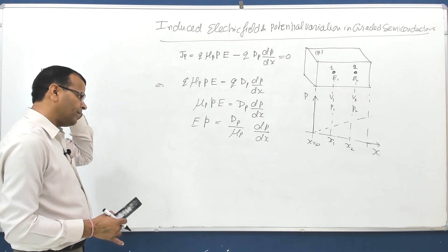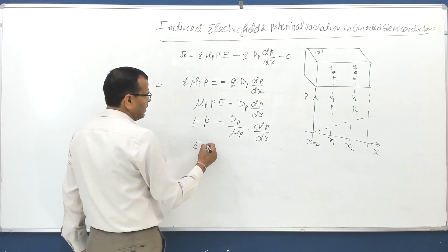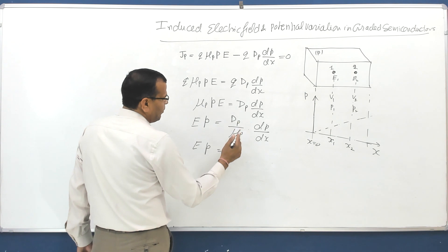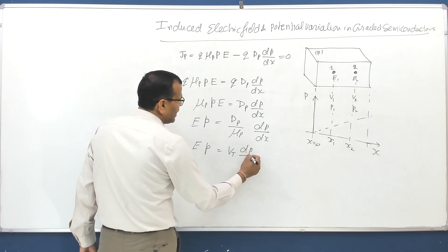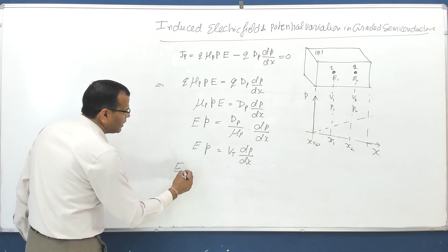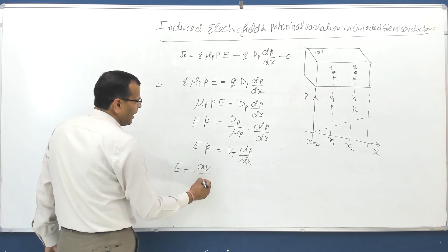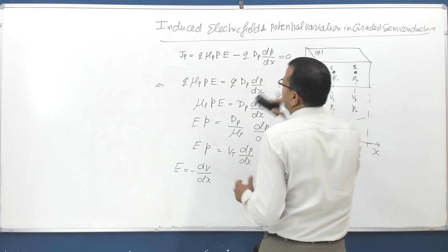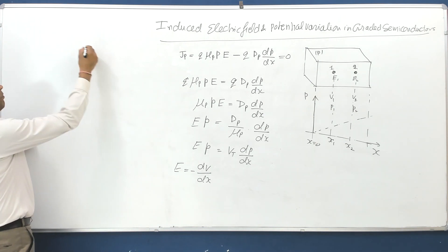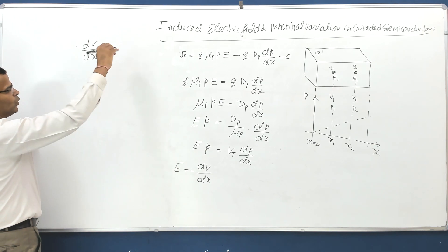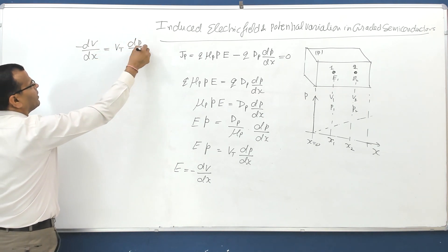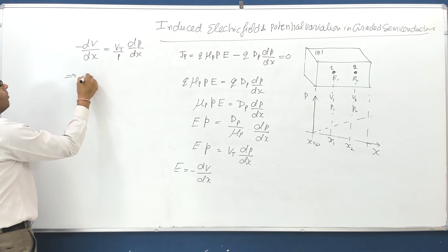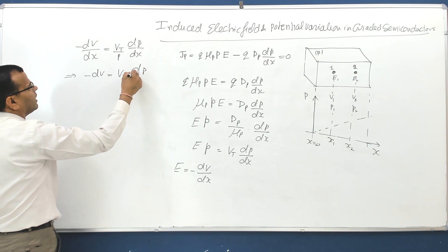Here, E·p = (Dp/μp)·(dp/dx), and Dp/μp is nothing but the thermal voltage VT. So E·p = VT·(dp/dx). Now, since electric field E is the potential gradient dV/dx, we can rewrite this relationship as: minus dV = VT·(dP/P).